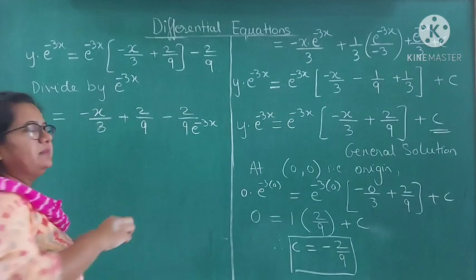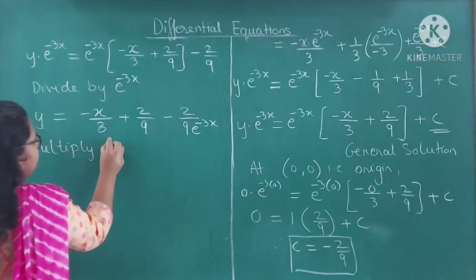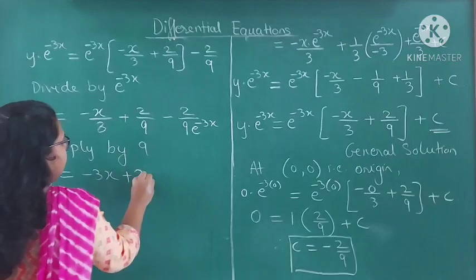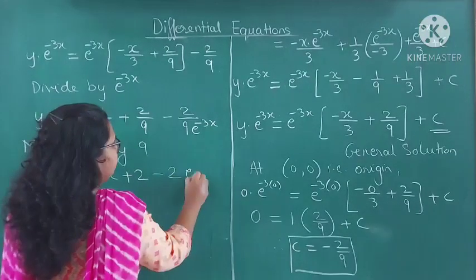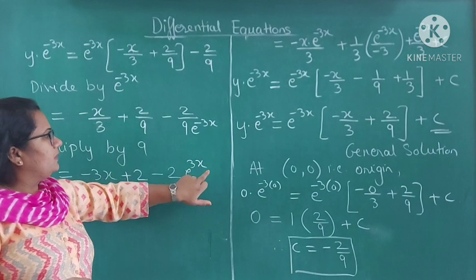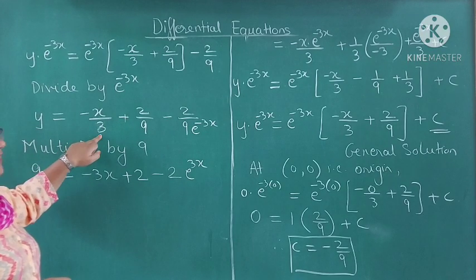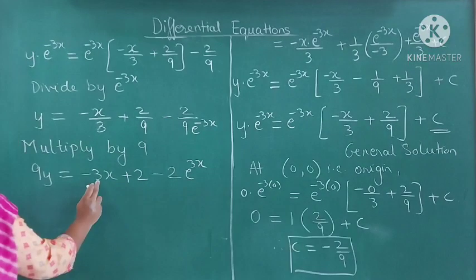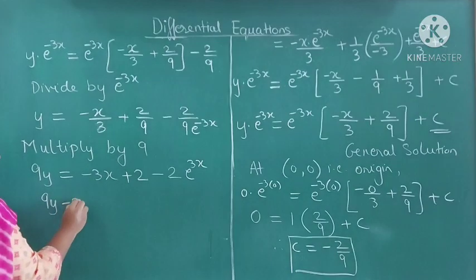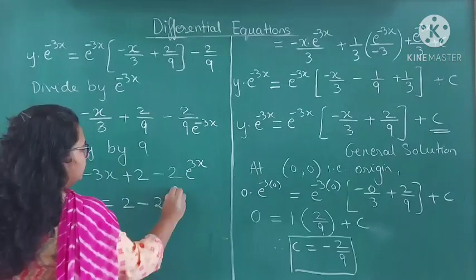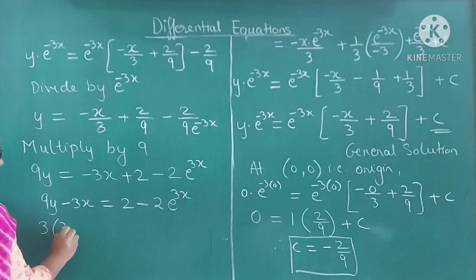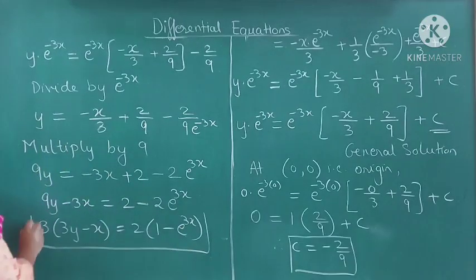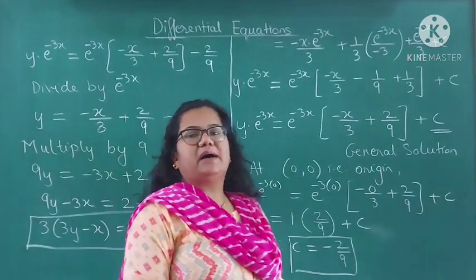Now if we want to simplify, we can multiply the whole equation by 9 and divide by e raised to minus 3x. Dividing by e raised to minus 3x: y equals minus x upon 3 plus 2 upon 9 minus 2 upon 9 into e raised to minus 3x... bringing terms together and multiplying by 9 gives 9y plus 3x equal to 2 minus 2 into e raised to 3x. Or we can write: 3(3y plus x) equals 2(1 minus e raised to 3x). This is the simplified equation of the curve.